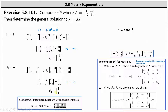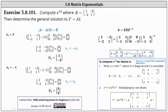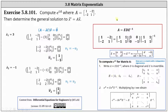Because we have two linearly independent eigenvectors, to find the matrix exponential e to the power of tA, we follow the general procedure outlined here on the right. Step one: we write matrix A in the form E times D times E inverse, where matrix E is formed using the eigenvectors as columns, and matrix D is the diagonal matrix with eigenvalues along the main diagonal. So for A equals E D E inverse, matrix E has V one as the first column and V two as the second column, D has the eigenvalues along the main diagonal with all other entries zero, and then we have times E inverse.